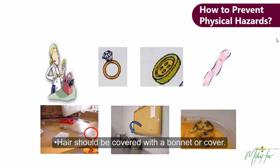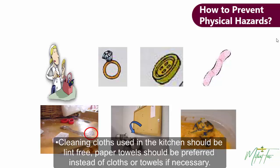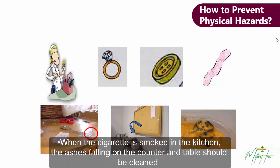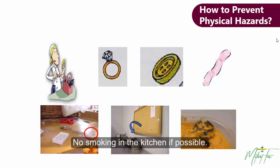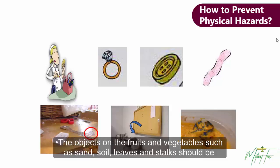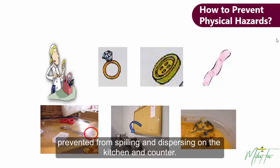Hair should be covered with a bun or cover. Cleaning clothes used in the kitchen should be lint-free. Paper towels should be preferred instead of cloth towels if necessary. When cigarettes are smoked in the kitchen, the ashes falling on the counter and table should be cleaned — no smoking in the kitchen if possible. Objects on the fruits and vegetables such as sand, soil, leaves, and stalks should be prevented from spilling and dispersing on the kitchen and counter.